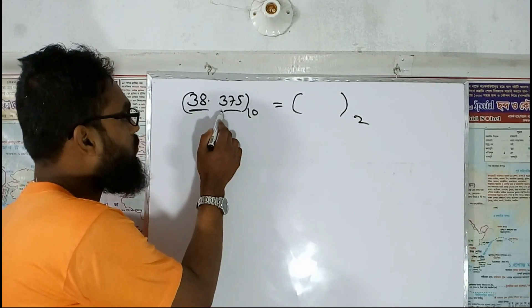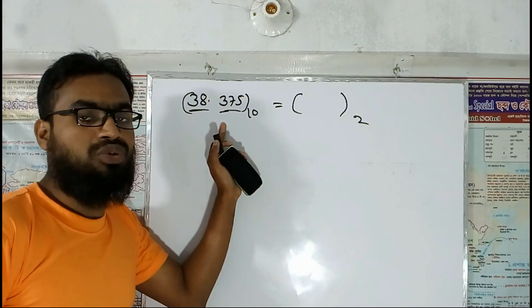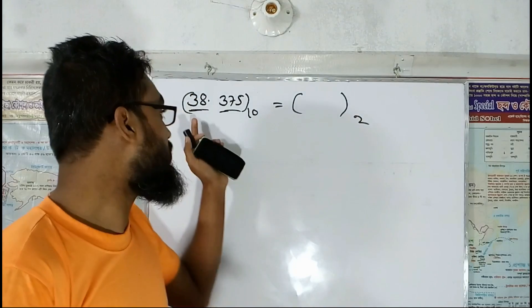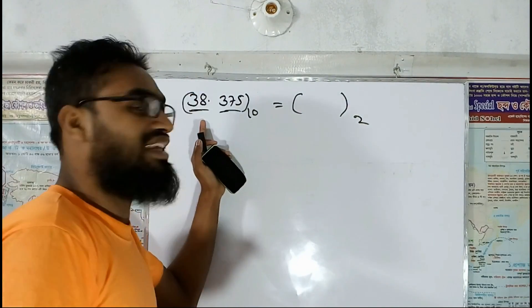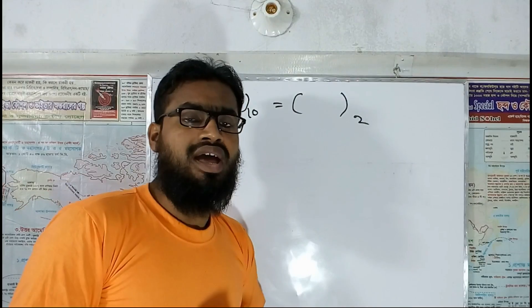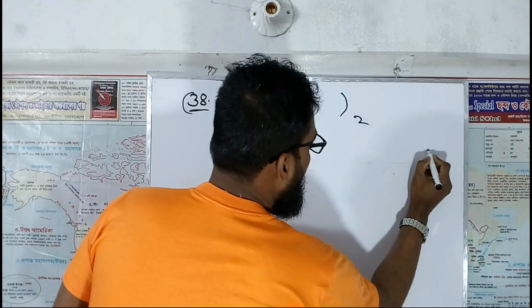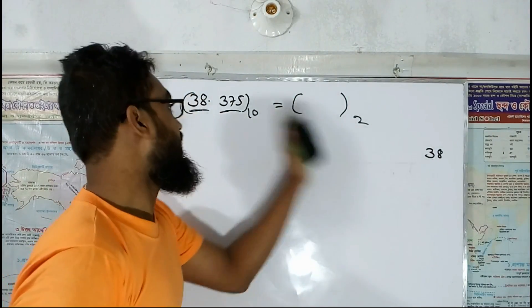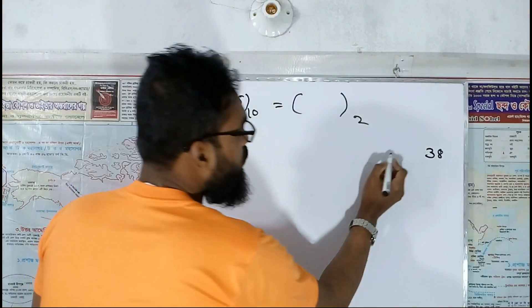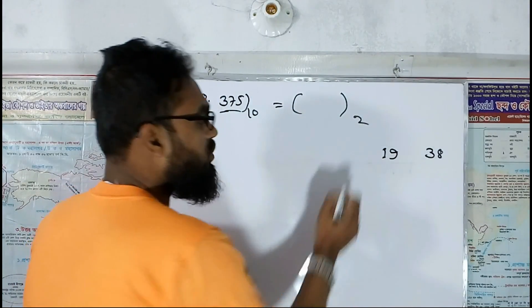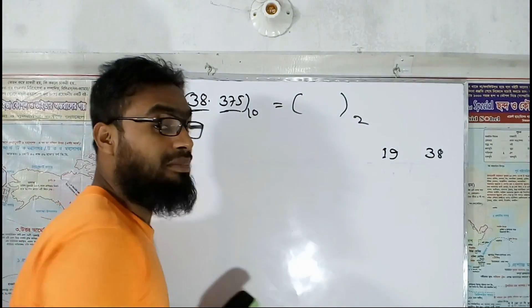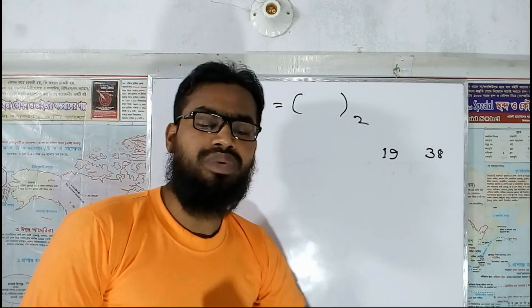First of all, we will work with the integer part. We will write this number 38, then divide: 38 divided by 2 is 19, then 19 divided by 2 gives 9.5. But I should note that we will not consider the decimal part here — we just take the whole number quotient.